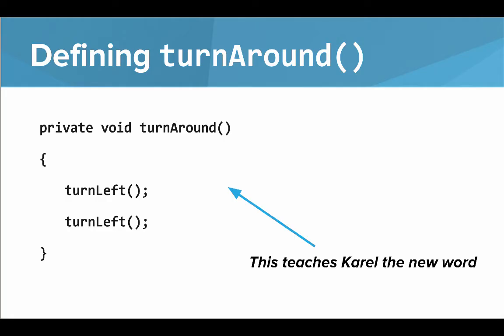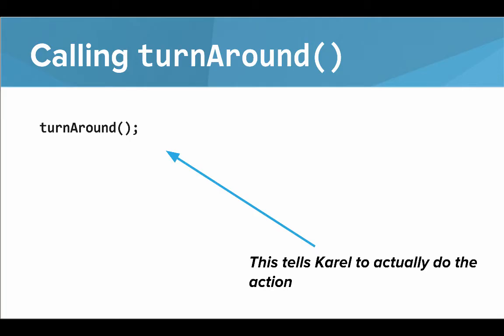So let's say we want to write a method to have Carol turn around. This right here is actually defining turn around. This is teaching Carol that new word. And this would be how you call turn around. You say turn around, open parenthesis, close parenthesis, semicolon. That's actually giving the command.